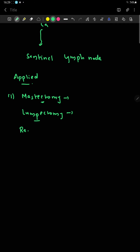Radical mastectomy is a surgical procedure in which the breast, the underlying pectoral muscles, and the axillary lymph nodes are all removed. This is normally done in cases of advanced breast cancer. Self-examination of the mammary gland is the only way for early diagnosis and appropriate treatment.